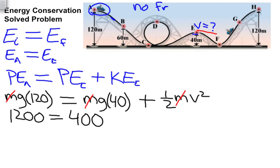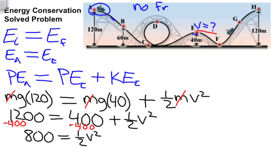Now, if we subtract 400 from both sides—remember, what you do to one side, you always do to the other side—then we end up with 800 equals one-half v squared. Multiply both sides by 2. The 2's cancel here. 2 times 800 is 1600, so now we have 1600 equals v squared.